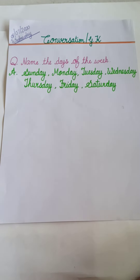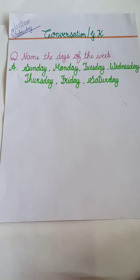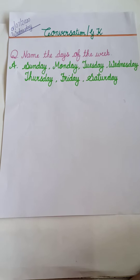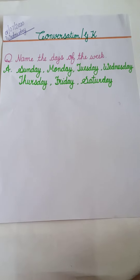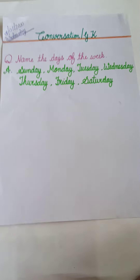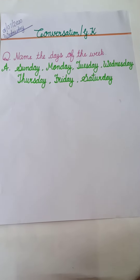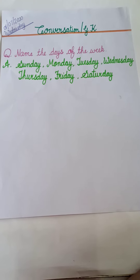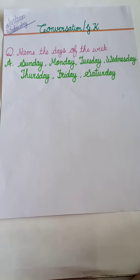There are 7 days in a week. Names of the days are Sunday, Monday, Tuesday, Wednesday, Thursday, Friday, Saturday.